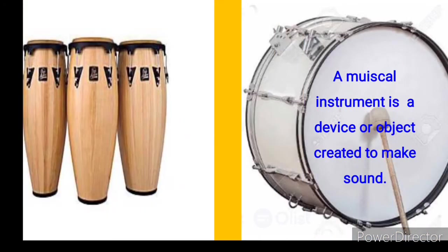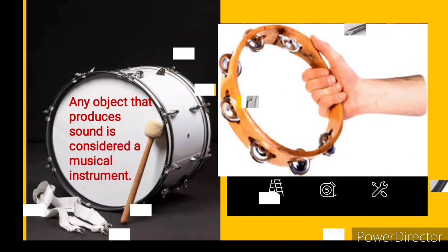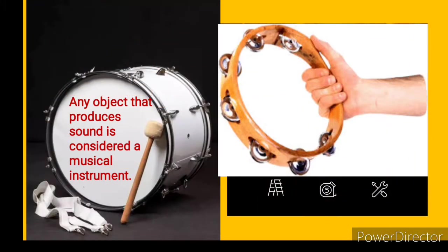A musical instrument is a device or object created to make sound. Any object that produces sound is considered a musical instrument. Can you say that after me? A musical instrument can be defined as a device or an object created to make sound, and any object that produces sound at all is considered a musical instrument.